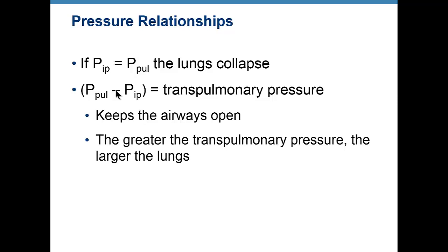In trauma situations — gunshot wounds, stab wounds, car accidents, broken ribs — these can penetrate the parietal pleura and cause lung collapse. There was actually a kid who died on the school bus years ago in the 1960s — they named a park after him in Milwaukee. He had a fractured rib from a football game, it punctured his parietal pleura, his lung collapsed, and he died on the school bus on the way back from an away game.